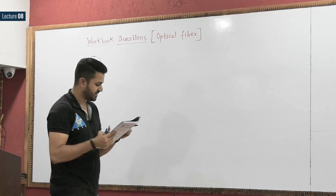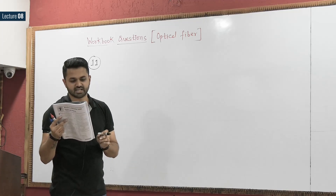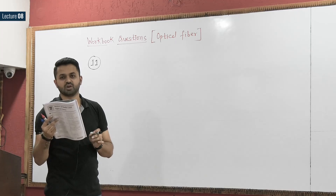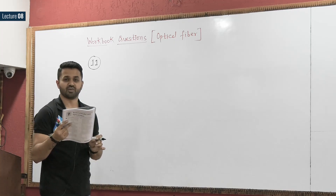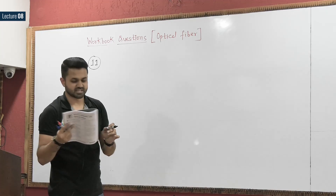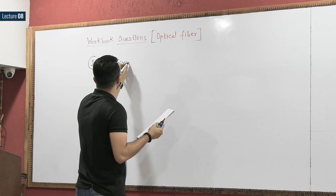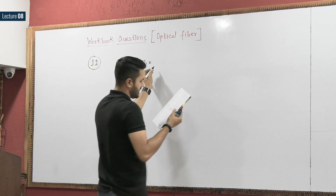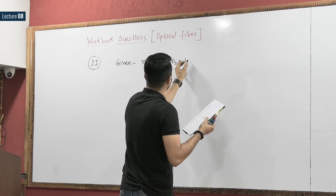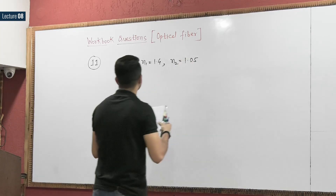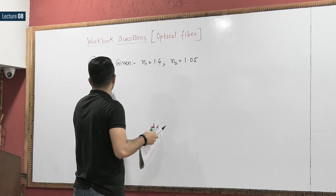Question number 11: A certain optical fiber has a refractive index of the cladding n1 equal to 1.4 and that of the core n2 equal to 1.05. Its numerical aperture will be? In this question, the value of n1 is 1.4 and the value of n2 is 1.05.